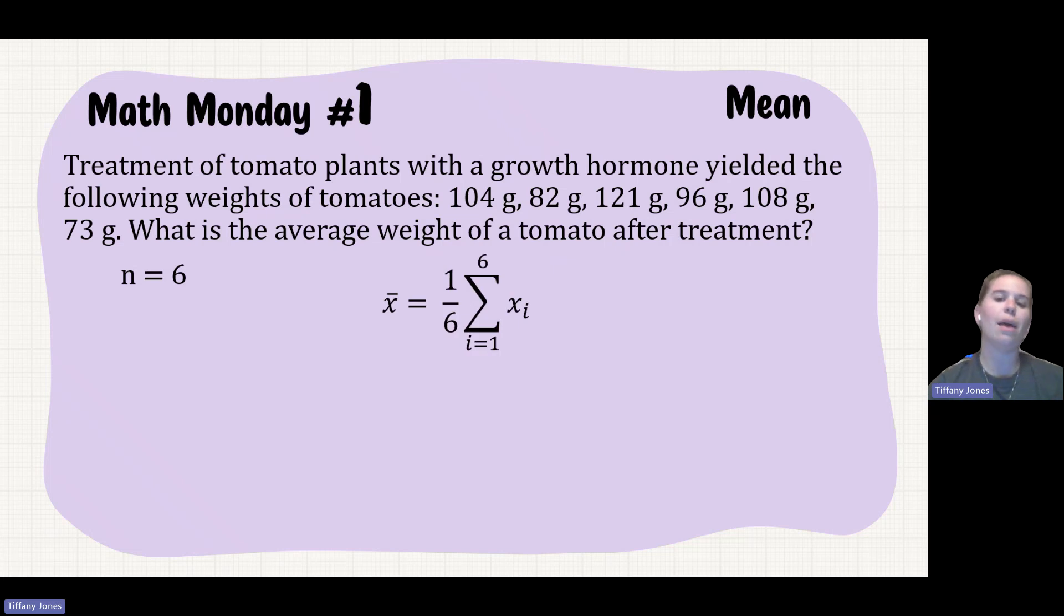If I go and I sub each of those values in, that means I'm going to say 1 over 6, so 1 over my N, and then I'm going to add the different values of X_i together: 104, 82, 121, 96, 108, and then 73. Let me add those together, you get 584, and then we take that and divide by 6, which is our N value, and it gives me 97.3.